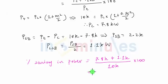If you solve this, this comes out to be equal to approximately 89 percent. 89 percent power is saved and we will be only transmitting the remaining 11 percent of the power.